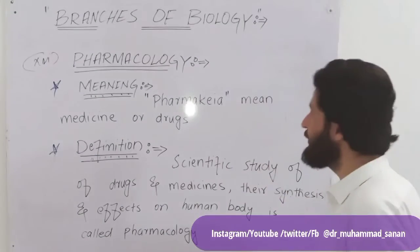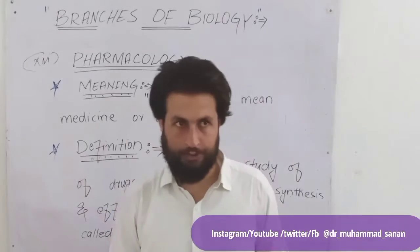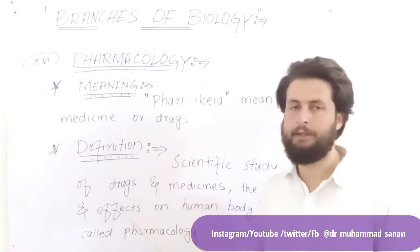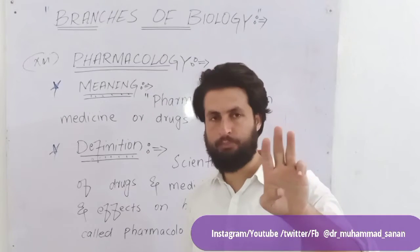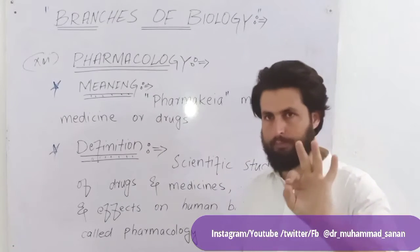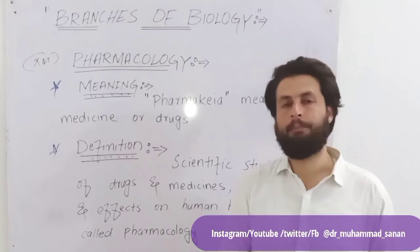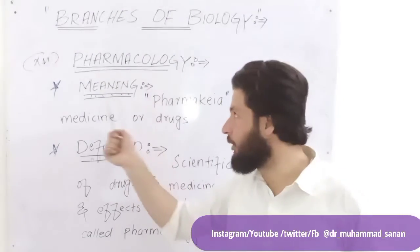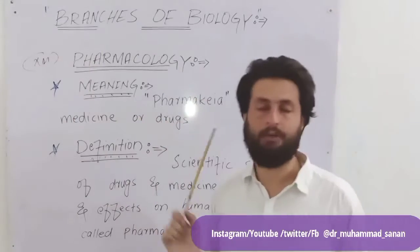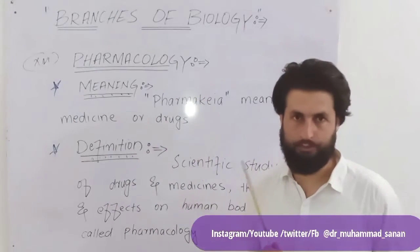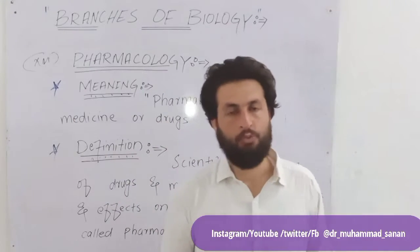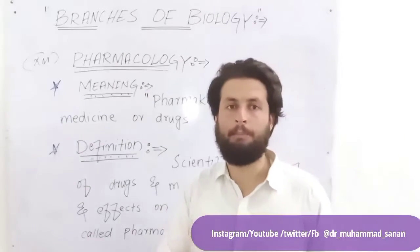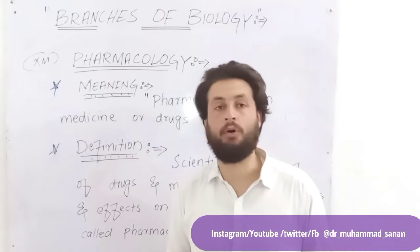This is the end of the branches of biology. We have studied about 19 branches in total: first the three main branches — botany, zoology, and microbiology — and after that we studied 16 sub-branches of biology. In the next lectures we will talk about the linkage of biology with other fields of study.